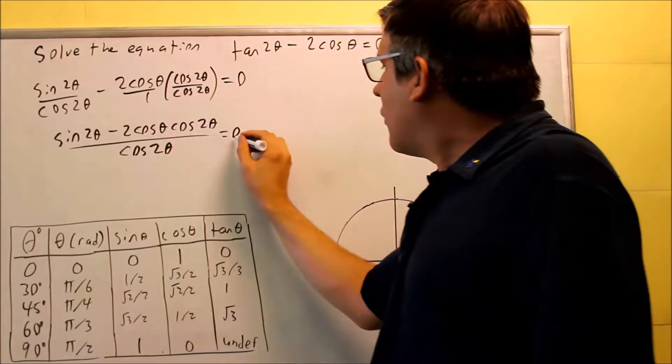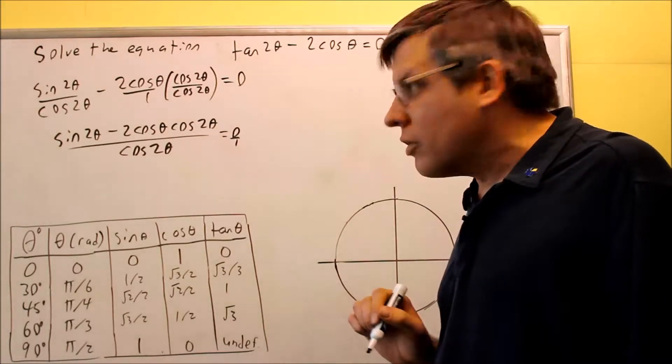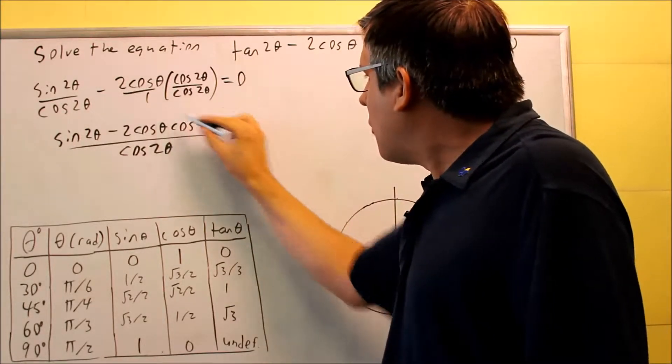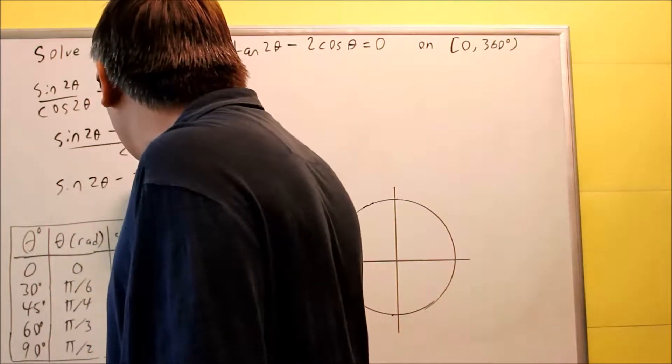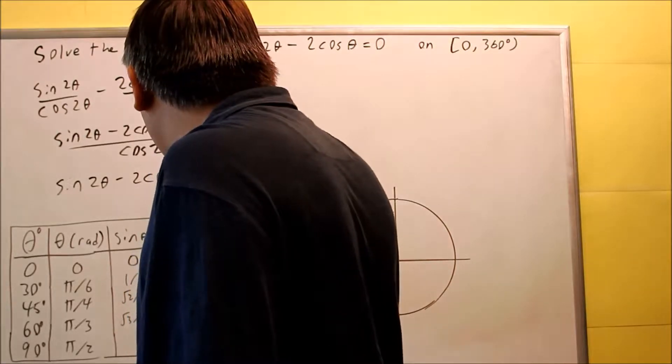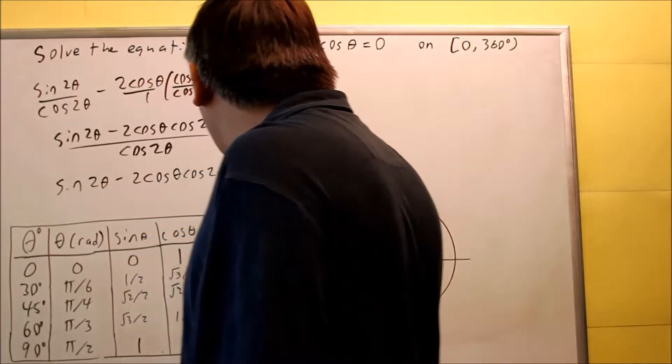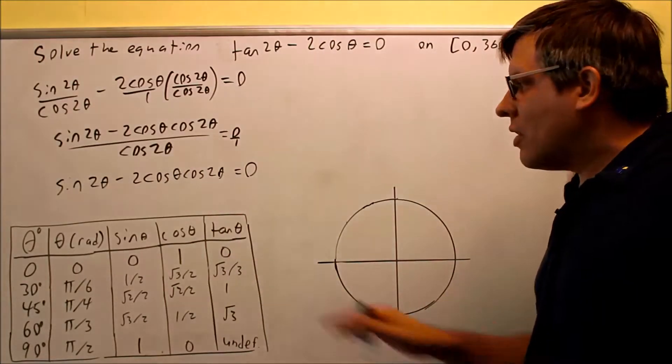Now once I have this, I can think of this as 0 over 1. I want to do some cross-multiplying here on this one, so I'm going to multiply these together. I get sine 2 theta minus 2 cosine theta, cosine theta, and cosine 2 theta. And then if I multiply this diagonal, I get a 0.